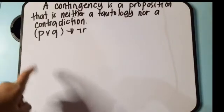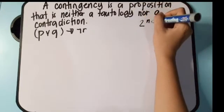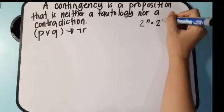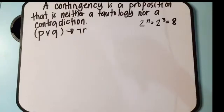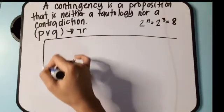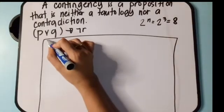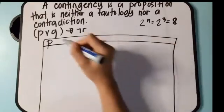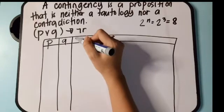We have a problem with three propositions. Using the formula 2 raised to N, that is 2 raised to 3, which gives us 8. So we will have 8 rows in our truth table with columns for P, Q, and R.